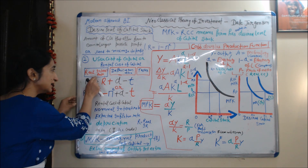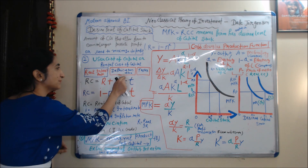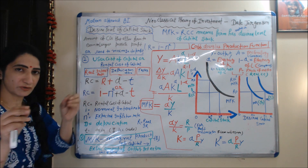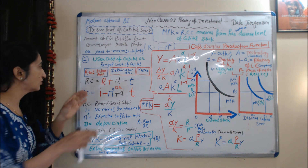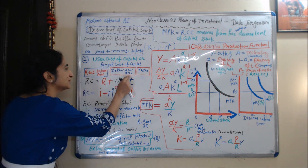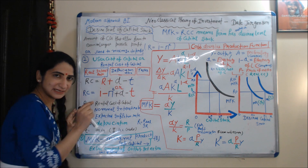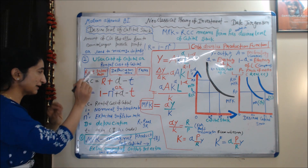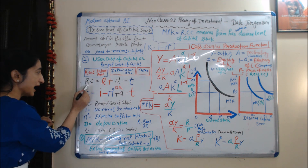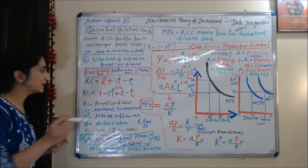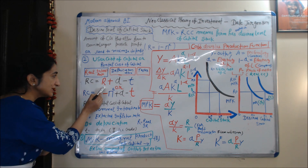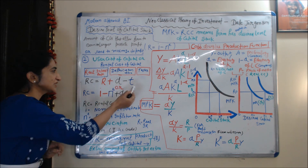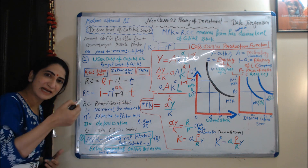Rental cost of capital includes real interest rate, depreciation, and taxes. The formula of rental cost of capital is: RC equals R plus D minus T, where R is the real interest rate, D is depreciation, and T is taxes.